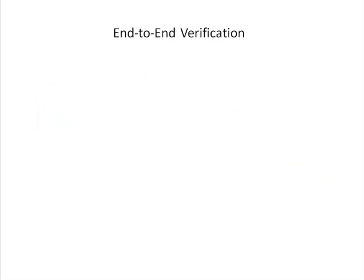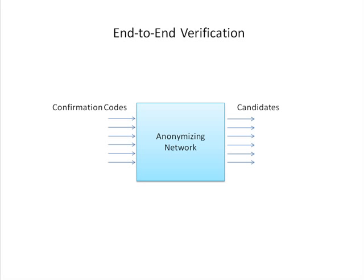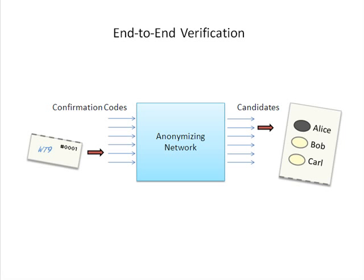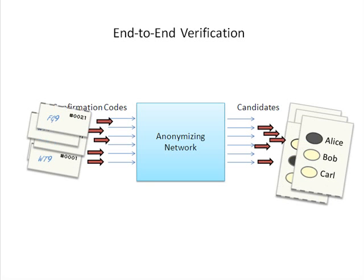The codes are an integral part of what's called end-to-end verification. A confirmation code is attached to a particular candidate. Now, to preserve voter privacy, we can't just associate the two directly. We use what's known as an anonymizing network, which is just a fancy way of saying that you can check this association without revealing who voted for whom. Your code gets entered into the network, and your vote comes out the other side in some random spot. The reason this is anonymizing is because all the codes are entered at once, and all the votes come out at once, in a shuffled way.